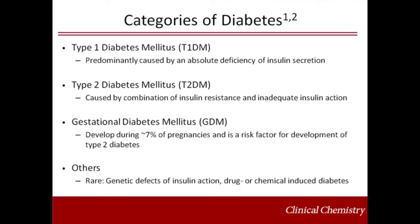However, the vast majority of cases of diabetes fall into two broad etiopathogenetic categories: type 1 and type 2. Type 1 diabetes mellitus, accounting for 5 to 10 percent of those with diabetes, is caused by an absolute deficiency of insulin secretion. It results predominantly from an autoimmune destruction of the islet cells of the pancreas with consequent insulin deficiency.